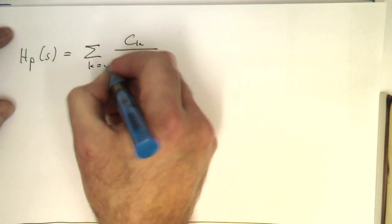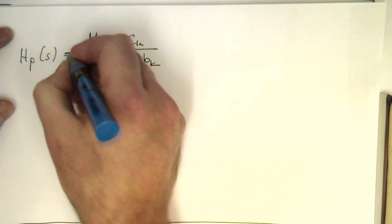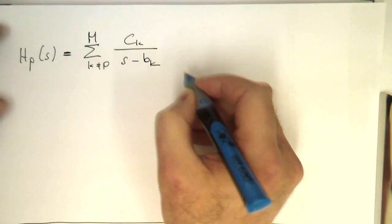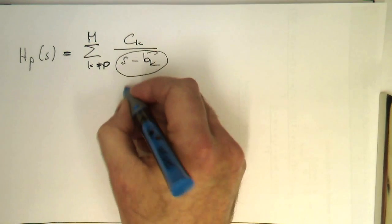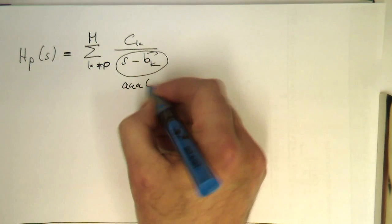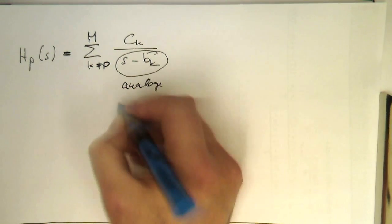So we just do something like that. Usually you won't do this by hand, but using a program which is able to do this expansion. And then with that, we are having our analog poles.